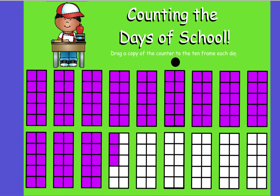Counting by tens, everyone: 10, 20, 30, 40, 50, 60, 70, 80, 90, 100, 110, 120, 121, 122, 123, and 124.